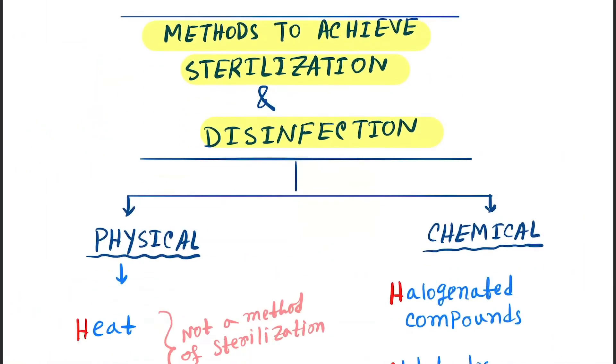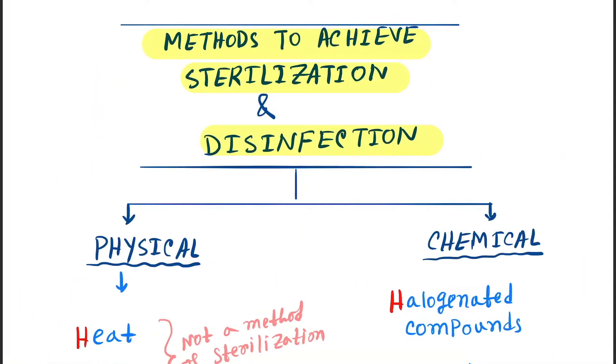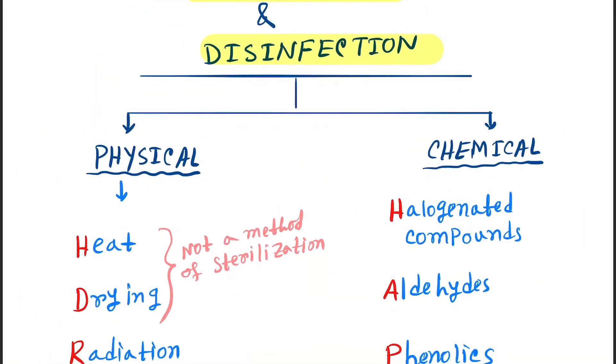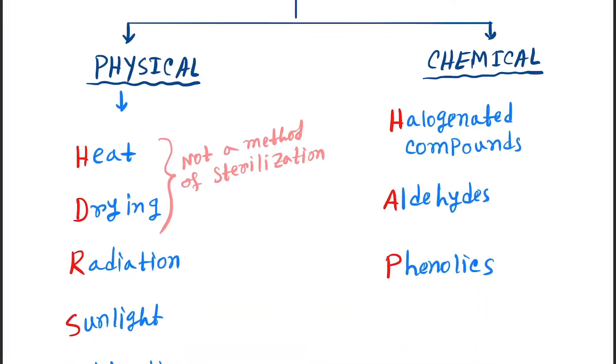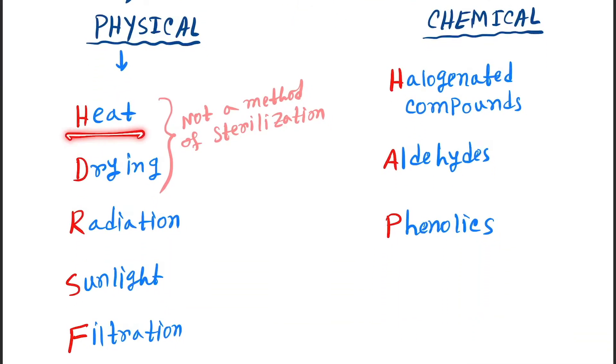Now let's see what types of sterilization processes are there. Methods to achieve sterilization and disinfection: first one is physical and second one is chemical. Physical methods are heat, drying, radiation, sunlight, and filtration. Chemical methods are halogenated compounds, aldehydes, and phenolics.